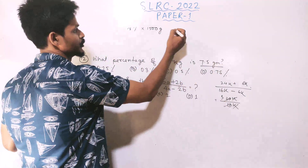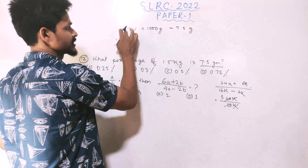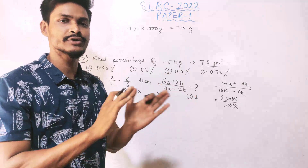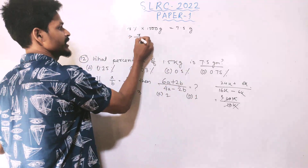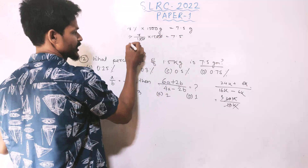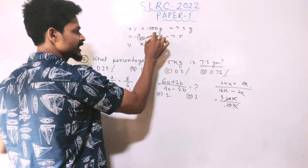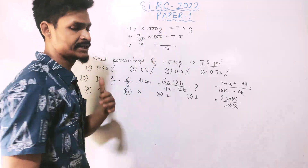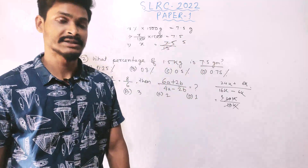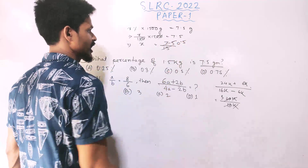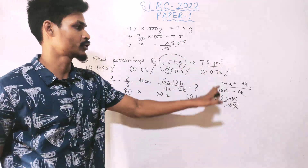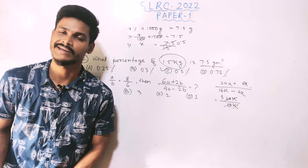Setting up the equation: x by 100 into 1500 equals 7.5. Solving, x equals 7.5 divided by 15, which gives 0.5. So the answer is 0.5 percent. That means 0.5% of 1.5 kg is 7.5 grams.